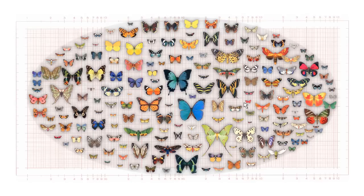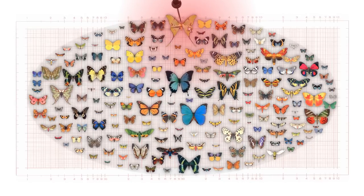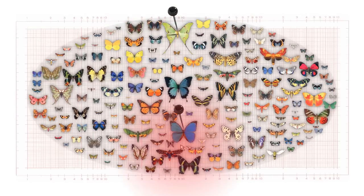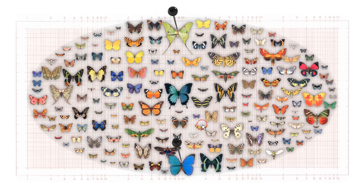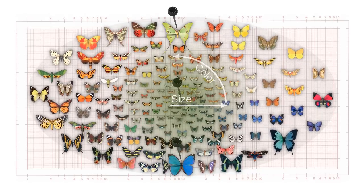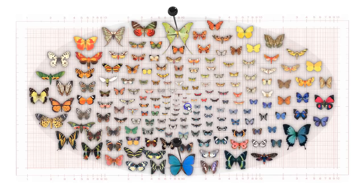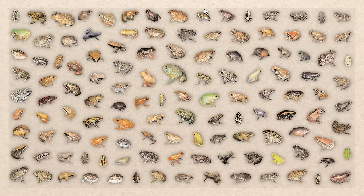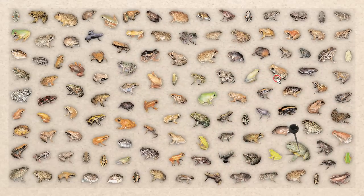Our approach infers what layout function the user intends. Here, a radial layout is detected. First, large primitives appear at the center and small ones outside. Second, hue, a periodic feature, is mapped to angle.